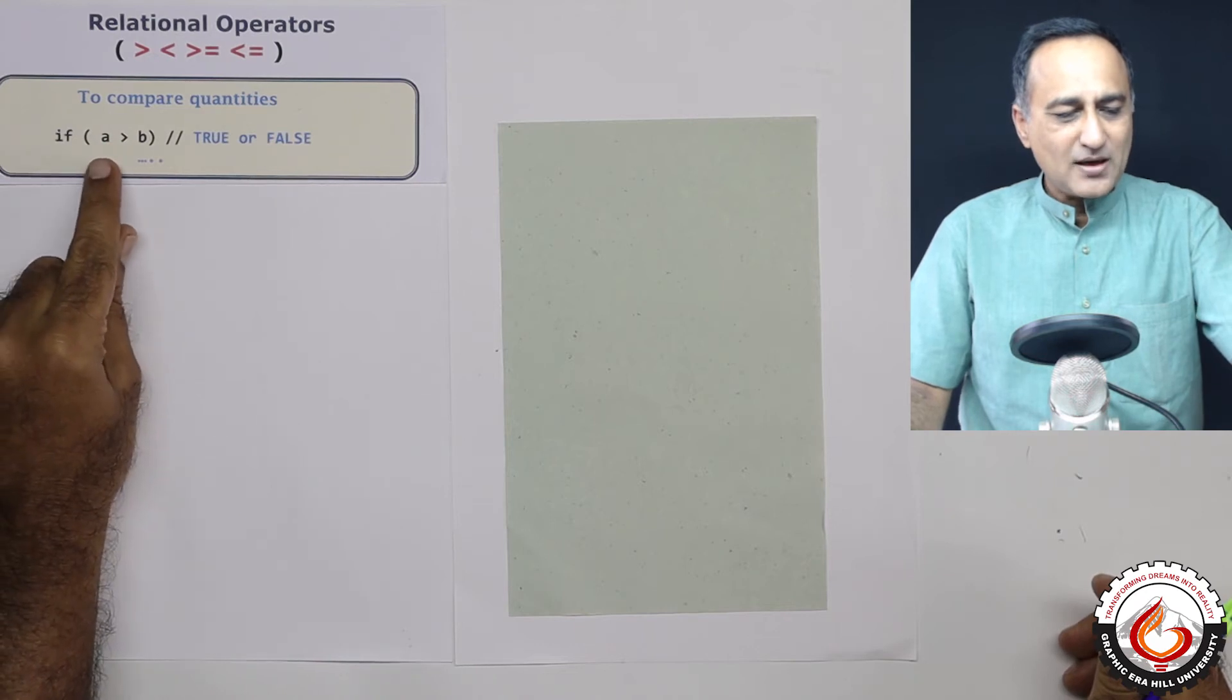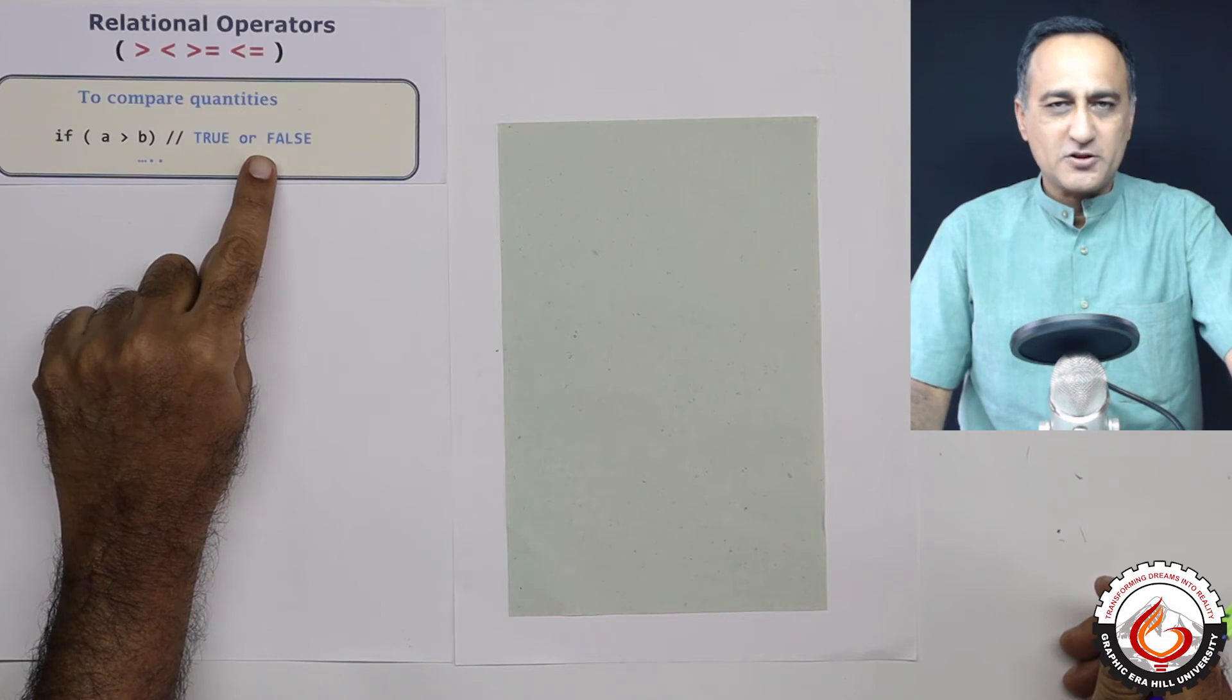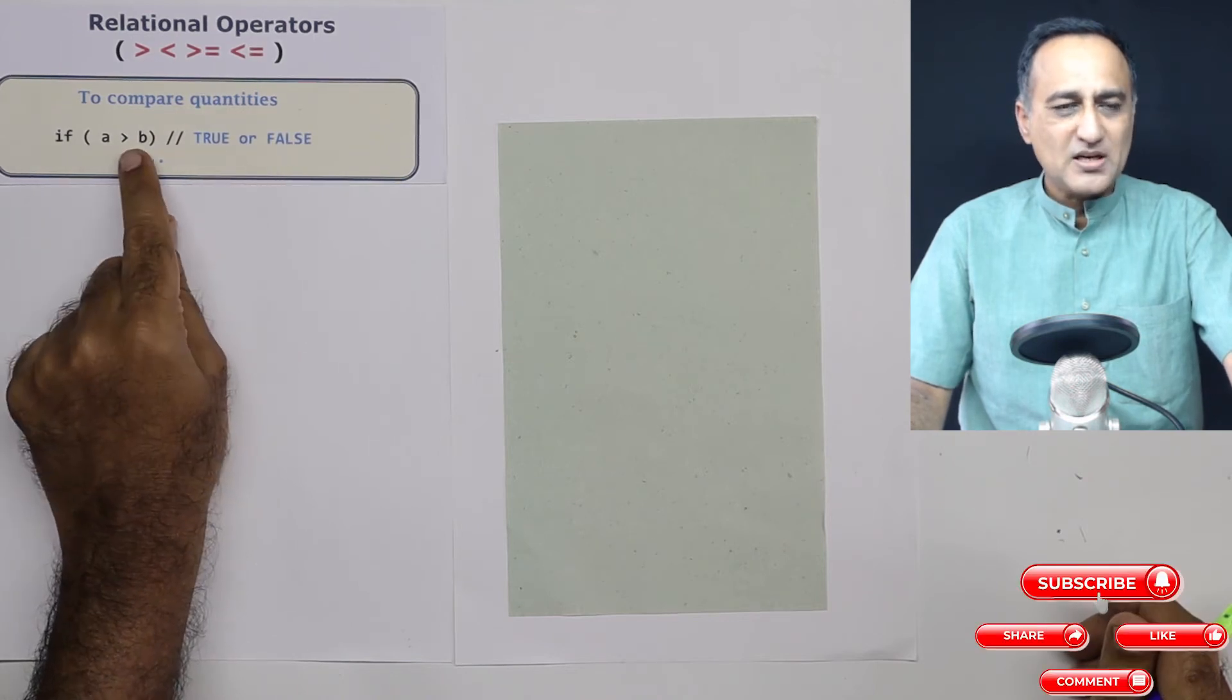So if I say if A greater than B, the result of this is either going to be true or false. True is going to be a nonzero number, false is going to be always zero.